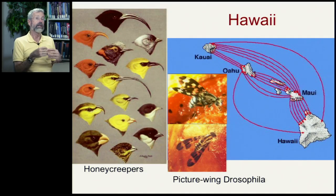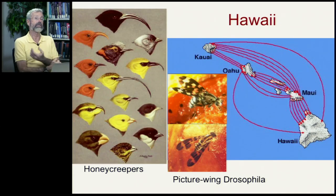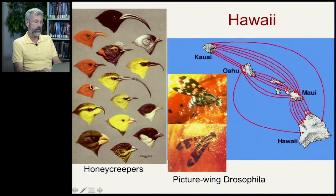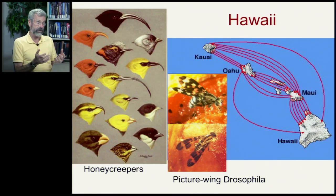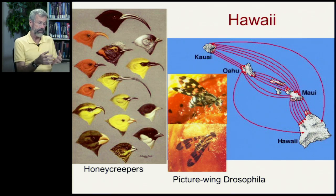Hawaii is even more isolated from the rest of the world than the Galapagos, and it has rather extraordinary native species. There's a whole group of birds called honeycreepers that have shown extraordinary diversification — some with huge long curved beaks, others with short squat beaks, and lots of different colors. They're all more closely related to each other than to anything else, having diversified after one founding family got out there and left a variety of descendants.